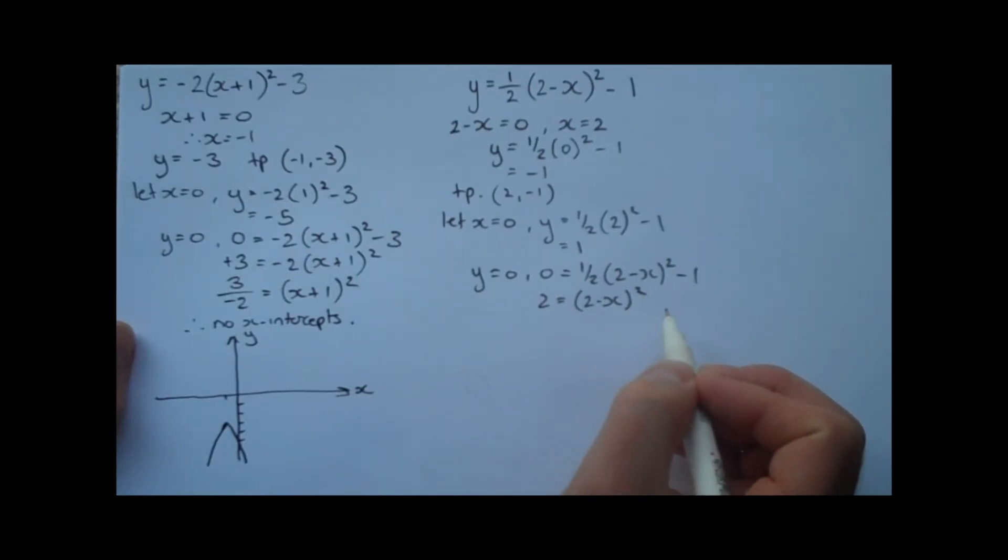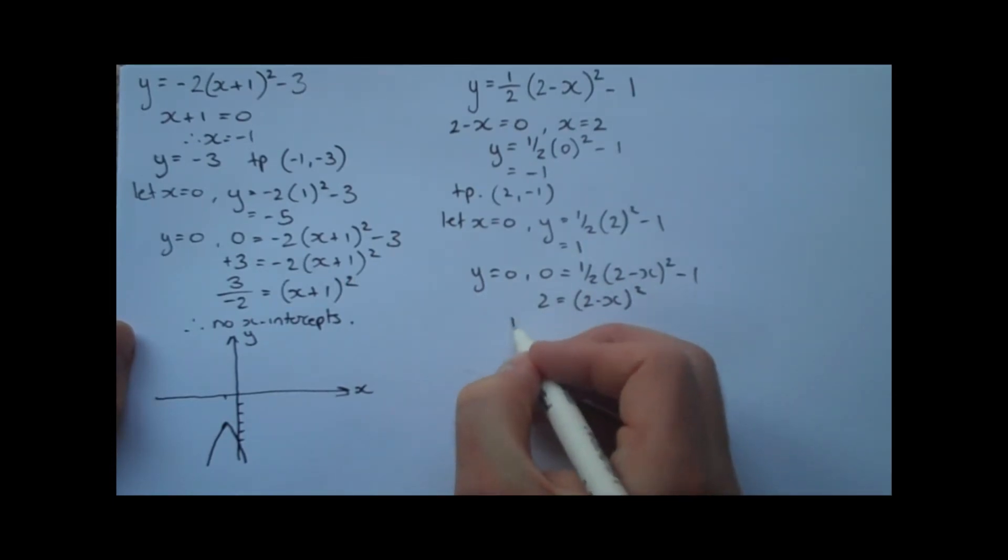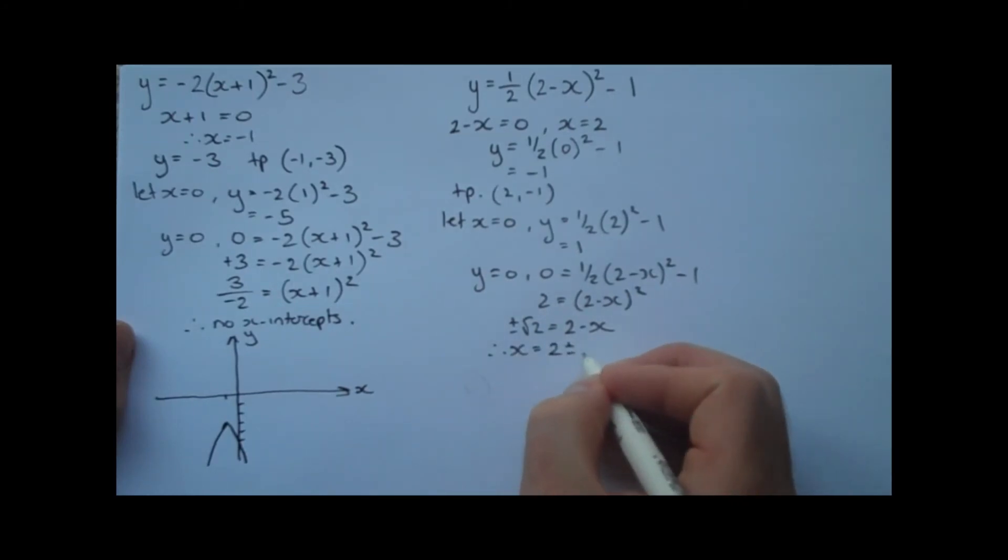So to get rid of this squared, we need to take the square root. And remember, whenever we take the square root, there's always going to be two solutions, the positive and the negative solution. So we get plus or minus the square root of two equals 2 - x. And solving, we get x equals 2 plus or minus the square root of two. Now, approximately, the square root of two is about 1.4. So if we wanted to equate this to a decimal, we've got x equals 3.4 and x equals about 0.6, approximately.